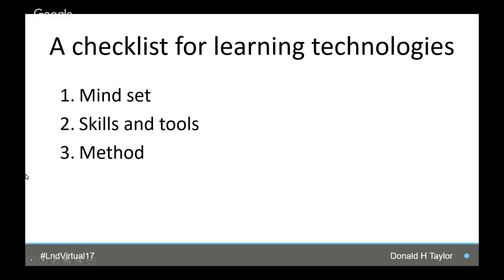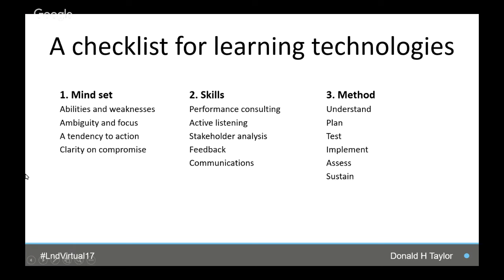If you have the first two but not a method, you may succeed — but you'll likely miss something important. I'm developing a checklist that I'm circulating to people, and I'll give you a URL to download it at the end. It runs to seven pages and will be a growing document. The checklist always has to be used intelligently, but it will guide you to things you might miss. The three things are: mindset, skills, and method.